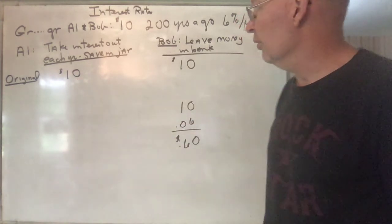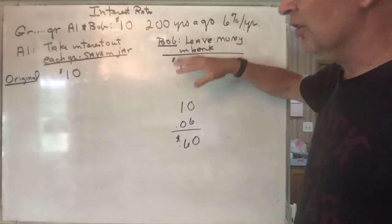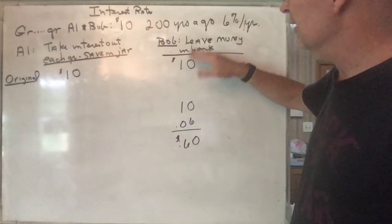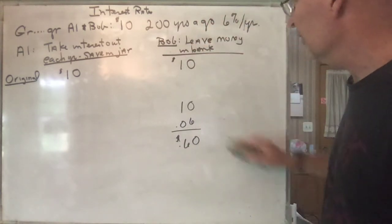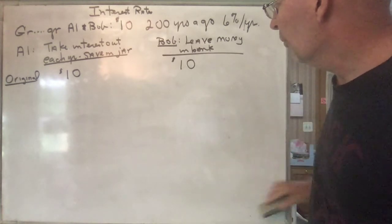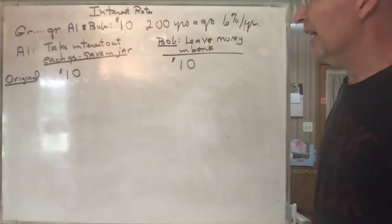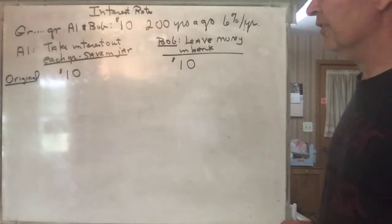And so you save that up and you still have your $10, and you save it up as it goes. Bob, he just said no, just let that accumulate and it'll just keep increasing. The next year you'll have a little more in the bank and so you'll have a little more to gain interest, and so on.